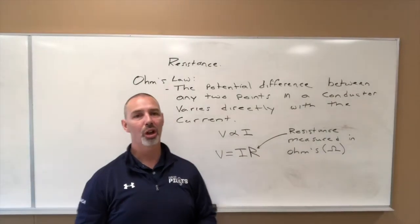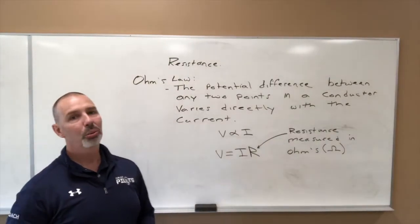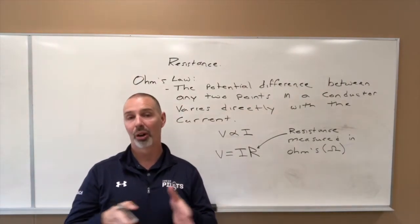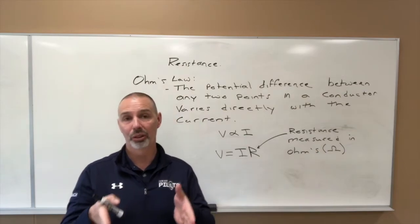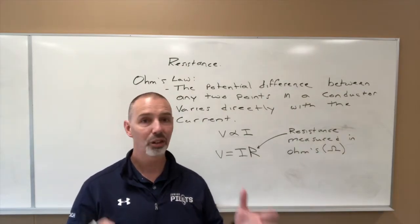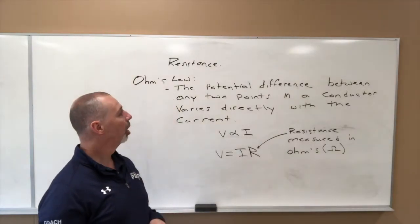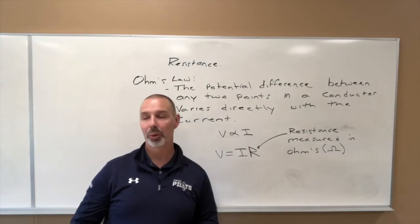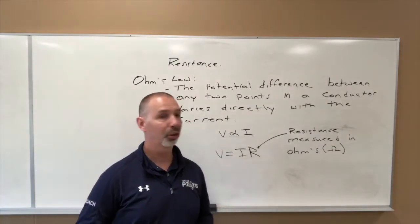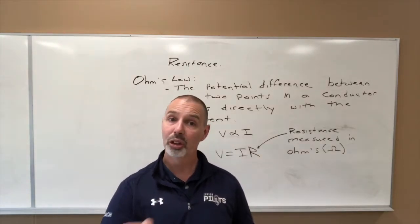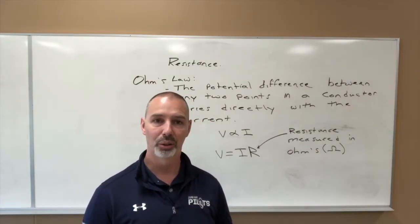So Ohm's law for resistance. Ohm's law simply states the potential difference between any two points on a conductor. So now our conductor is our resistor, or the wire, wherever it might be. If we just had a circuit, any two points on a conductor varies directly with the current. So when we had our parallel circuit over there, the current changed, the voltage remained constant, which means that the resistors were of different values there.